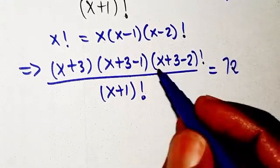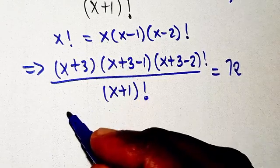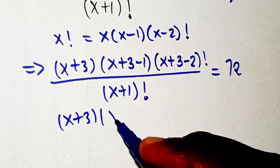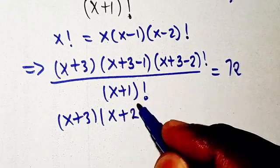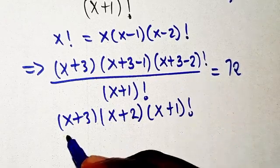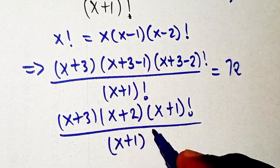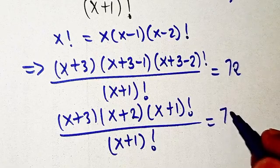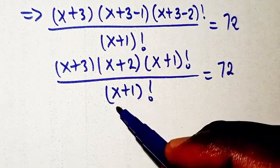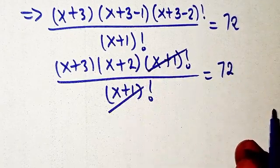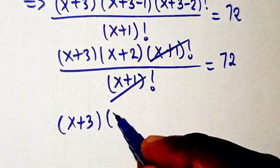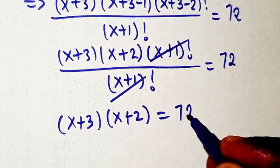From there, simplifying what we have inside the parentheses: x plus three minus one gives x plus two, and x plus three minus two gives x plus one factorial. So we have x plus three times x plus two times x plus one factorial, divided by x plus one factorial, equals 72. The x plus one factorials cancel out.